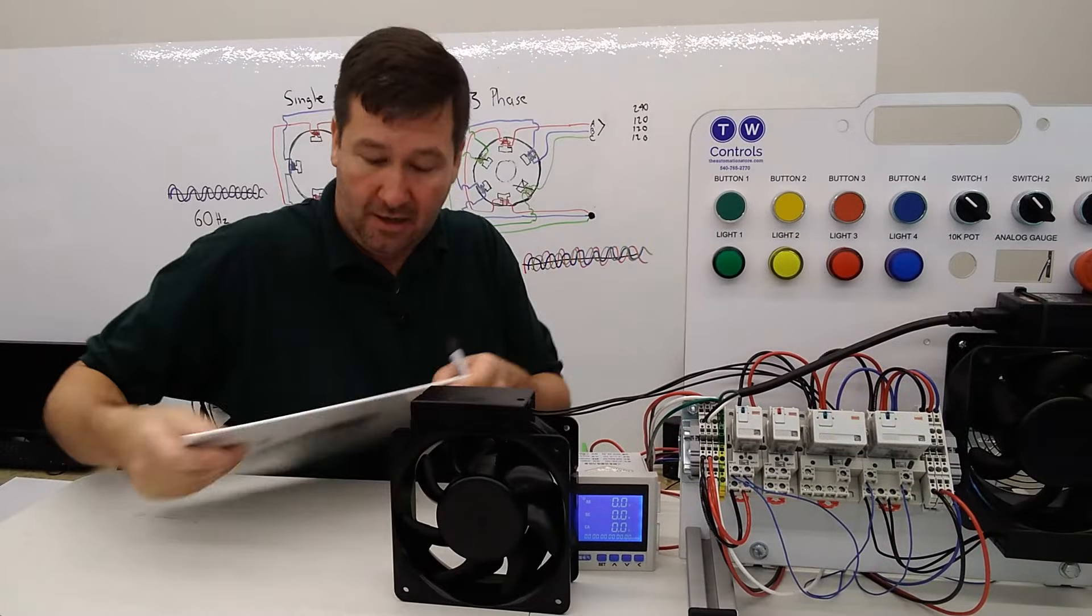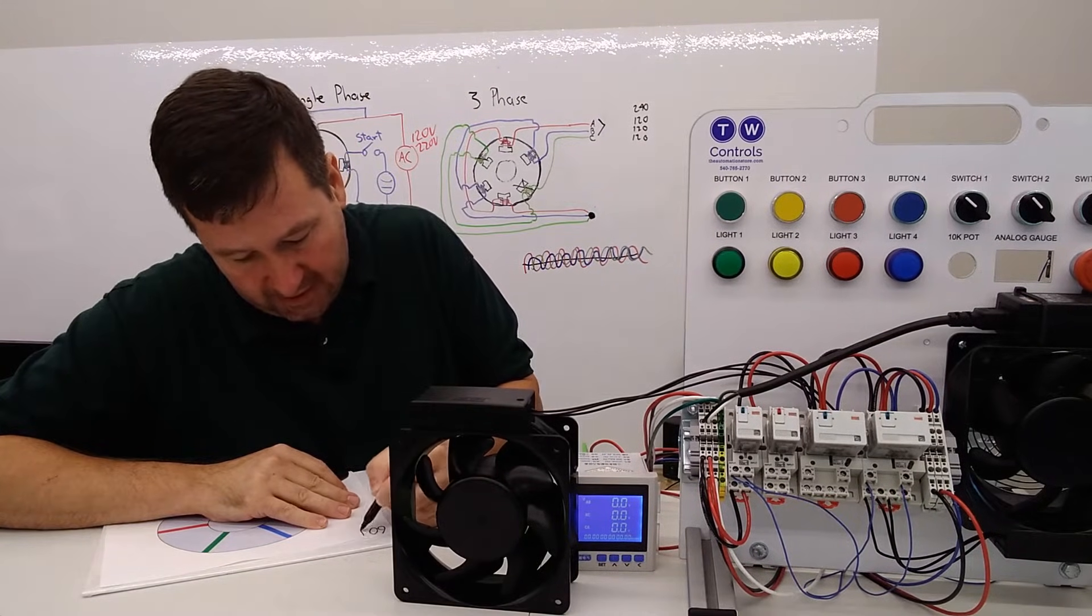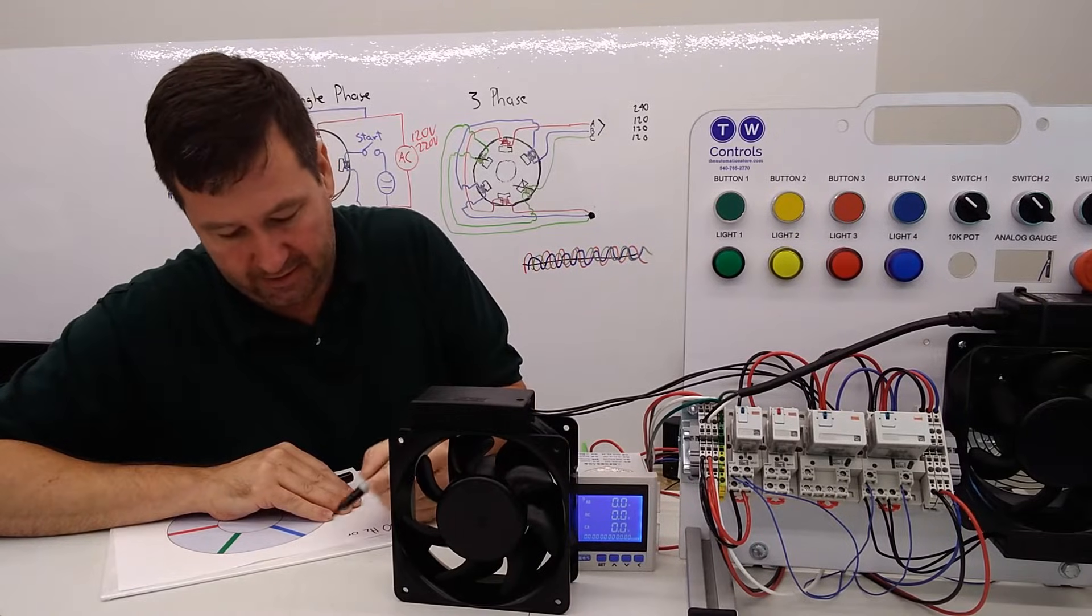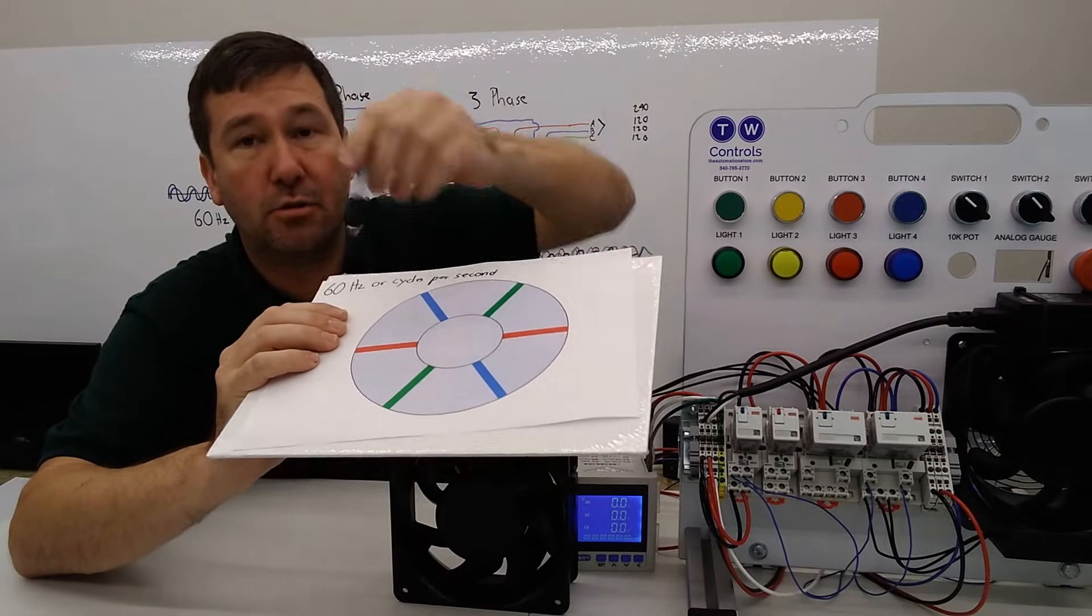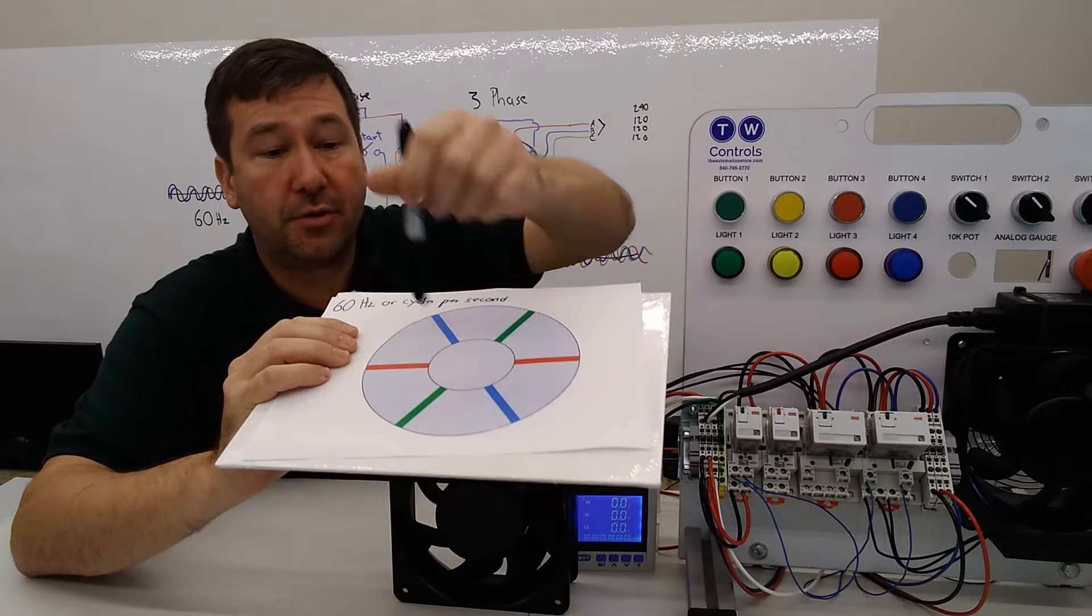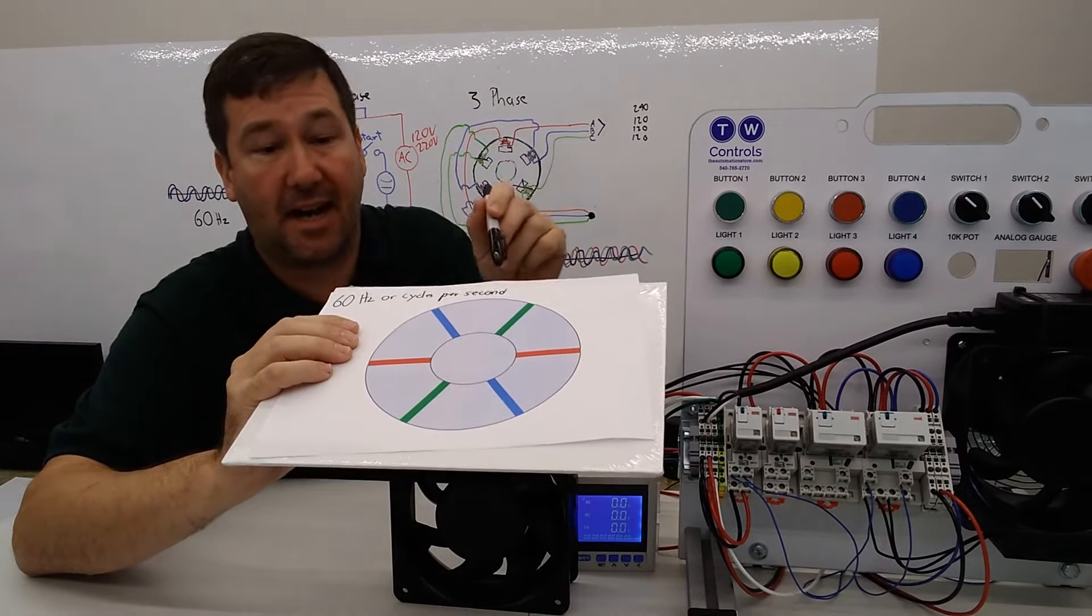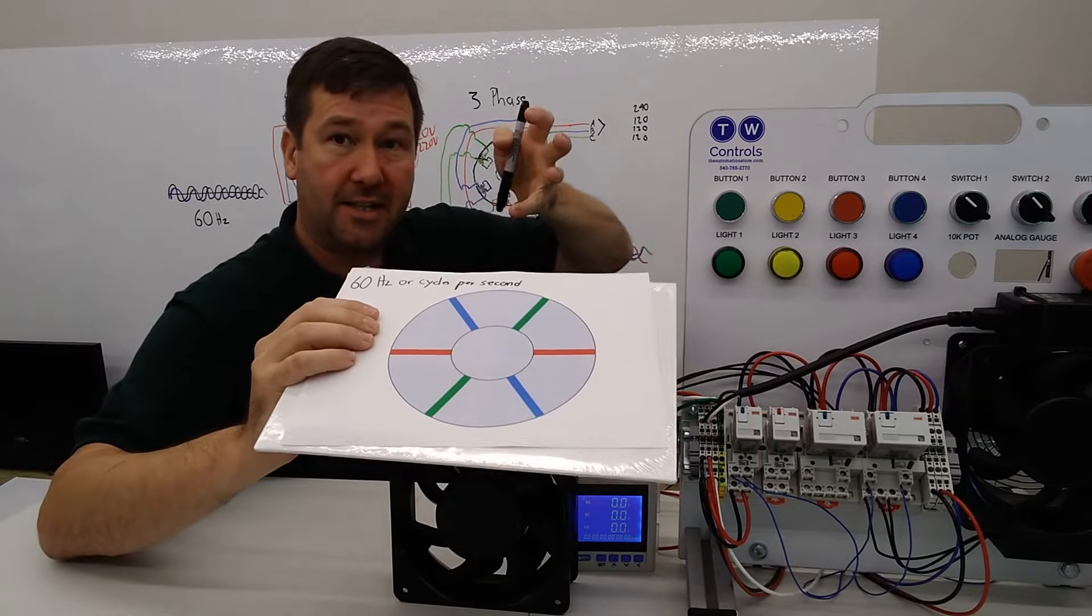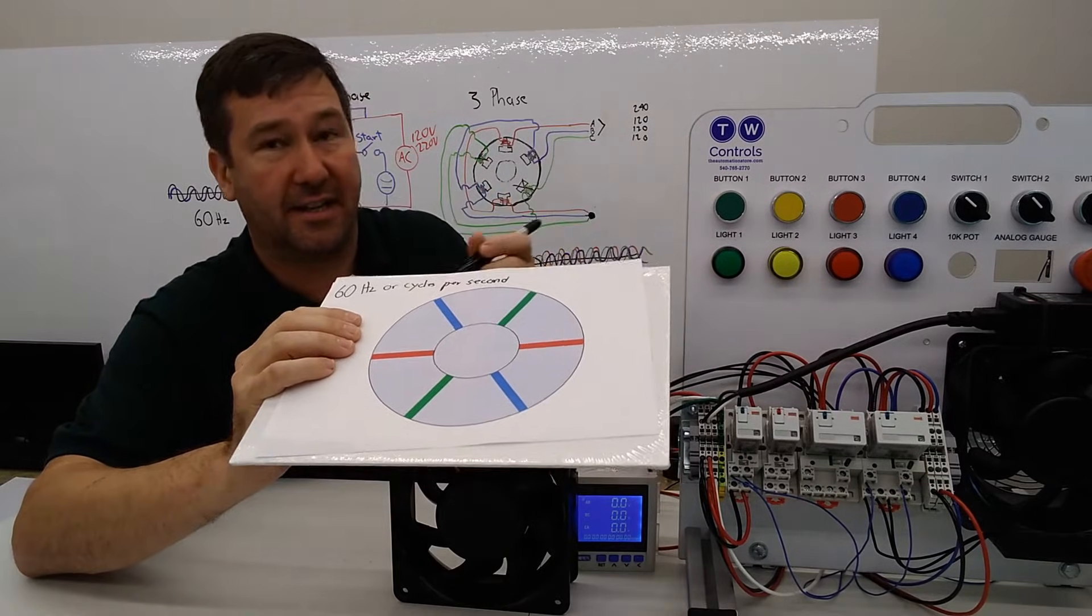So in the United States, we have 60 hertz, and 60 hertz is 60 cycles per second. So we have 60 cycles per second, and then this is a two-pole motor. So a two-pole motor is going to go north-south, north-south, north-south, 60 times per second. That means this rotating magnetic field, which is tied to our squirrel cage, is rotating 60 cycles per second.